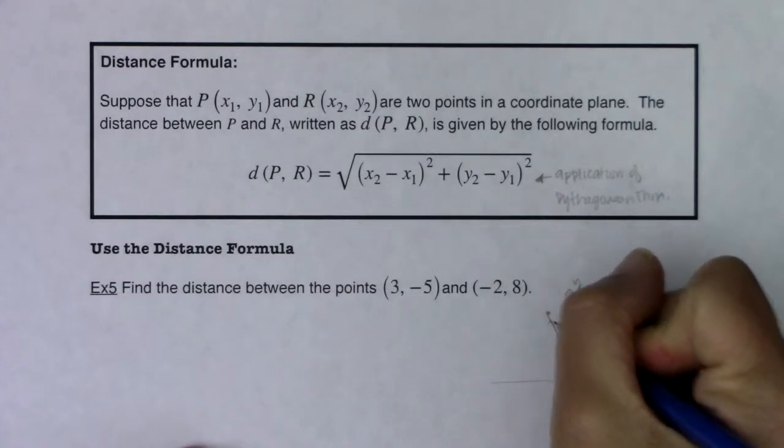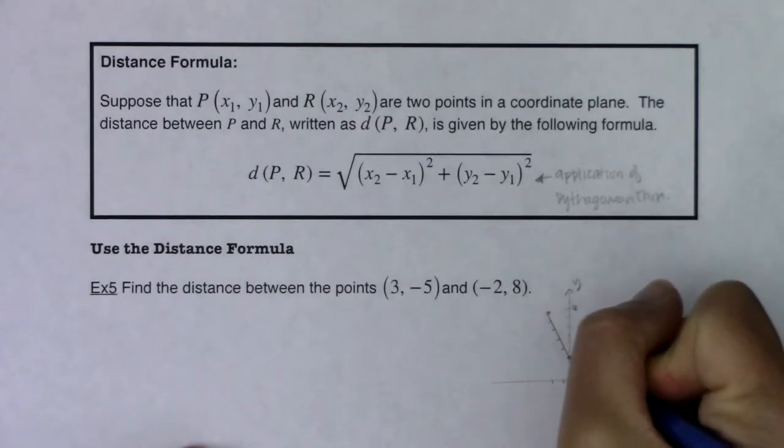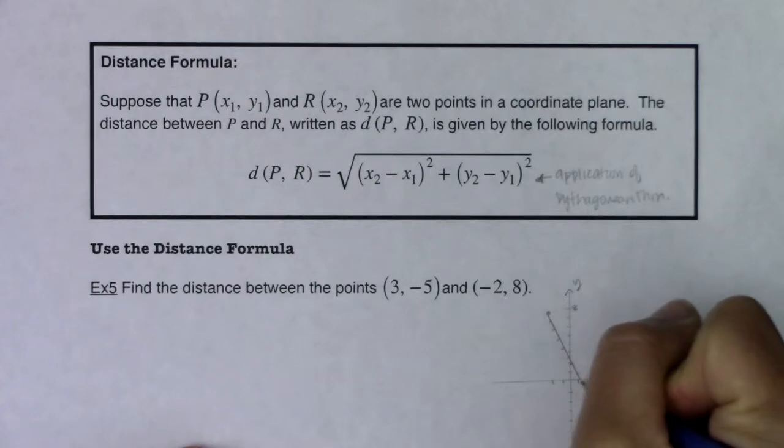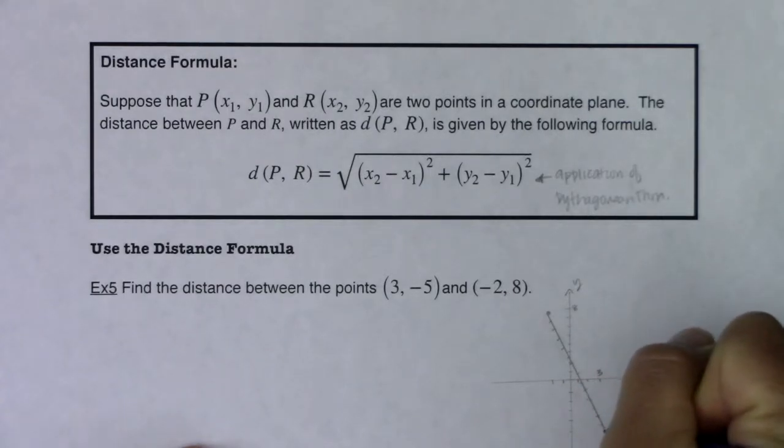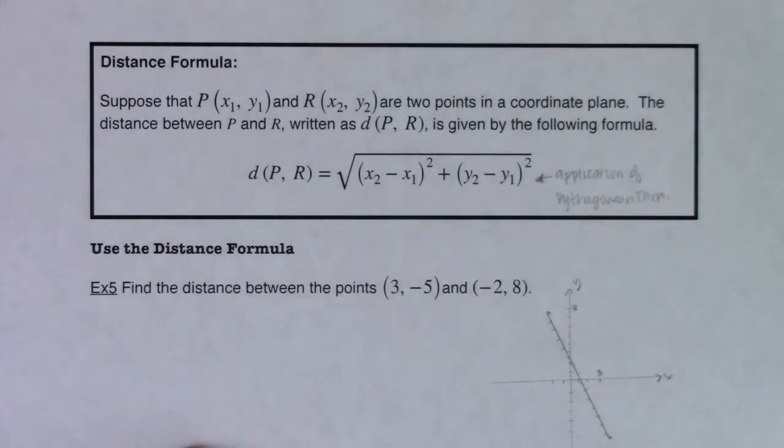If I was going to guess this distance, I see 1, 2, 3, 4, 5, 6, 7, 8, 9, 10, 11, 12, 13, 14, maybe 14 and a half, right?